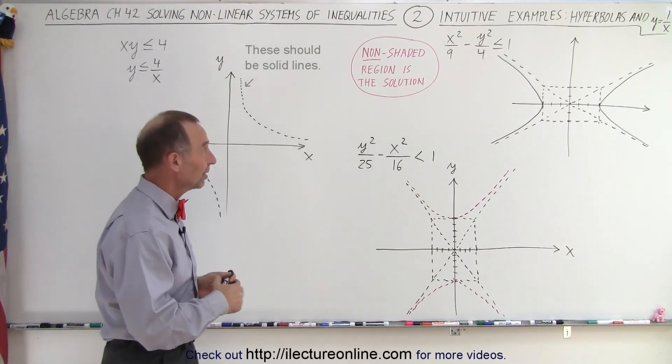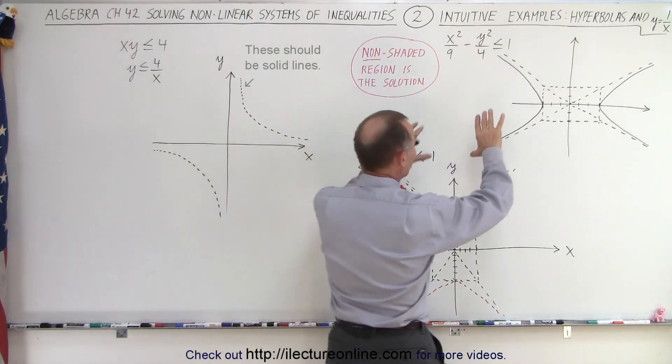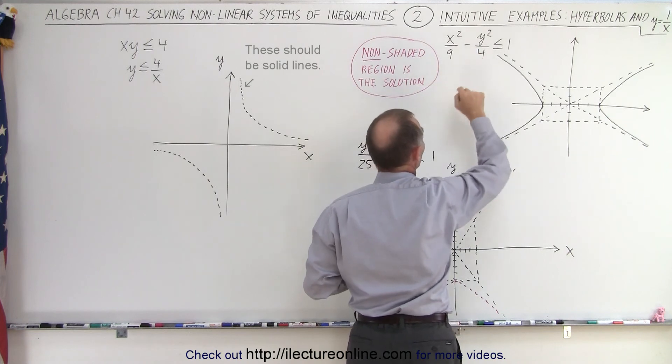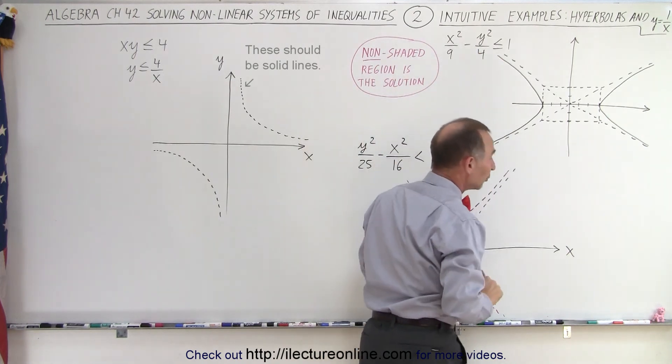First, hyperbolas. Here we have your typical hyperbola which opens sideways because x is in front and y is behind. x squared over 9 minus y squared over 4 less than or equal to 1.